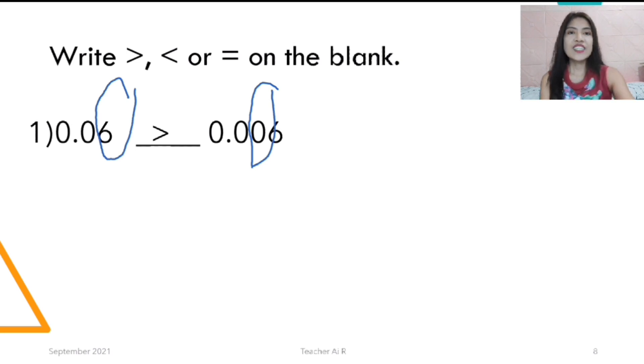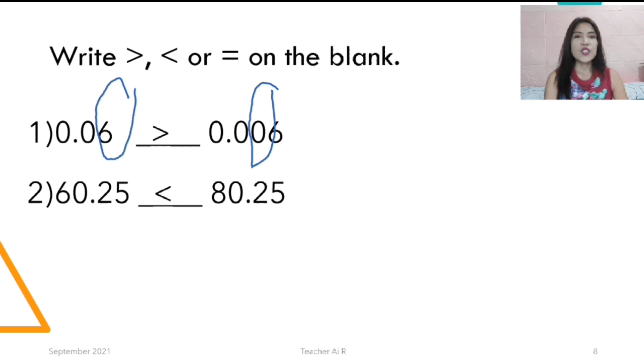Next, number 2. Which is bigger? We're going to compare the whole number. The whole number there is 60 and 80. The bigger number is 80. So you're going to put your symbol as 60.25 is less than 80.25.